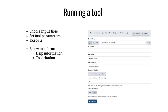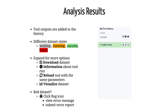When you click on a tool it will show up in the middle panel. Here you can select your input files and set the parameters for the tool, then hit the execute button to start the tool. Older versions of a tool are usually kept available to ensure reproducibility.